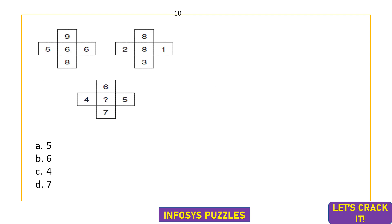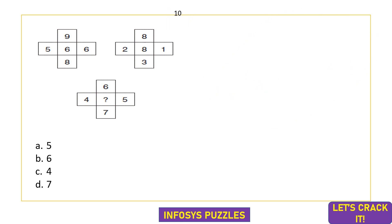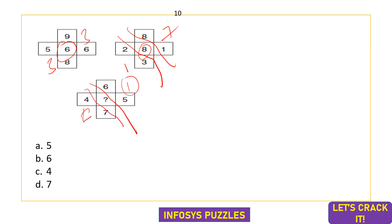A small reminder: subscribe to the channel for all placement preparation content. For the tenth question, 9, 6, 5, 8 are on the corners and 6 is in the middle. 9−6 = 3 and 8−5 = 3, so sum of differences = 6. For another box: 8−1 = 7 and 3−2 = 1, giving sum = 8. Here: 6−5 = 1 and 7−4 = 3, giving 3+1 = 4. Option C is the correct answer.